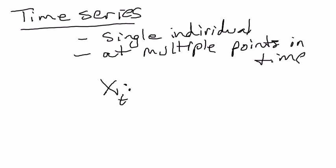We could look at not just countries over time — it could be states, like the unemployment rate in Connecticut over a period of time. Or it could be firms, like the profit of GE over time. It could be census tract data, schools, or individual people — like the test scores of an individual student over time. The key thing is it's a single individual and you're looking at them over a period of time. We'll work mostly with cross-sectional data, and some examples will be time series.